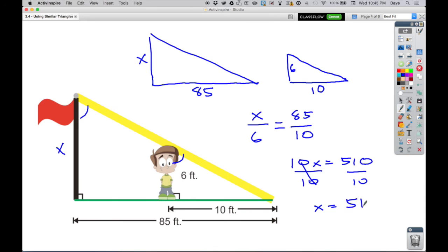That's a 51-foot flagpole based on indirect measurements. So that's how you use similar triangles to find indirect measurements.